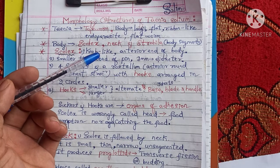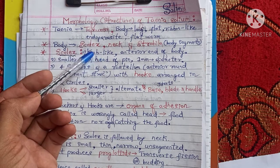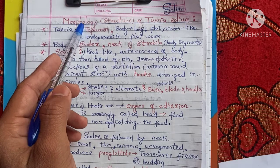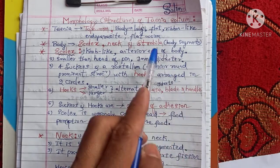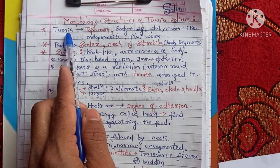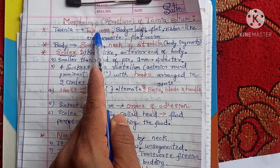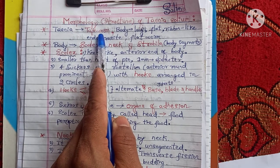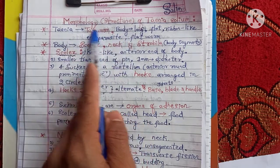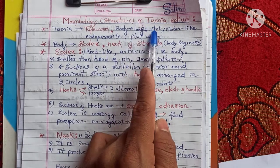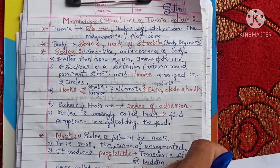Welcome back to the Sam Biology Classes Online. I am Salim. Today we are going to study about the morphology or structure of Taenia solium. Taenia solium is commonly called tapeworm and it belongs to the phylum Platyhelminthes and the class Cestoda. The body of the tapeworm is very long, flat, ribbon-like, and it is an endoparasite of man.